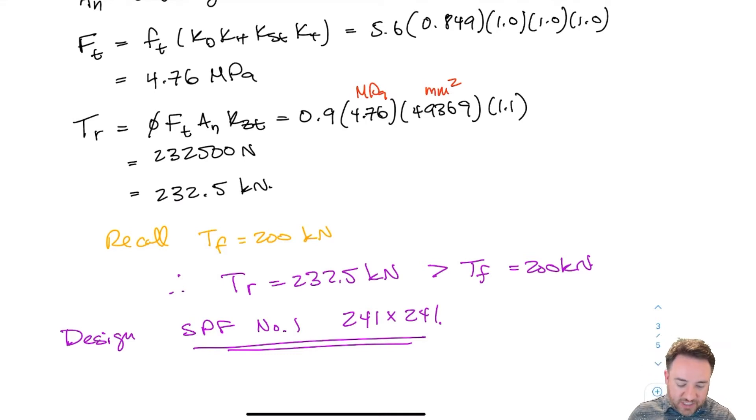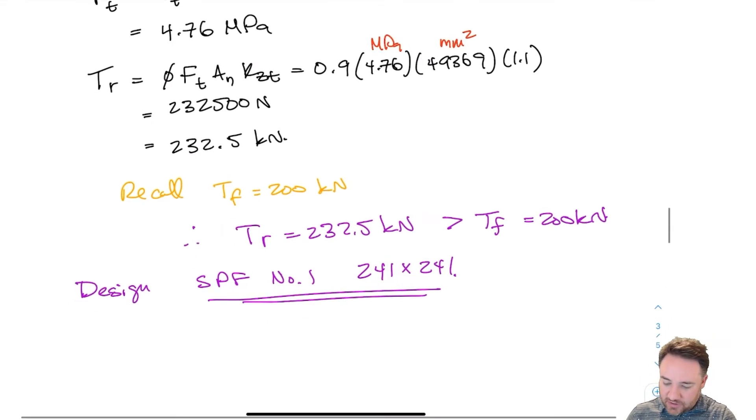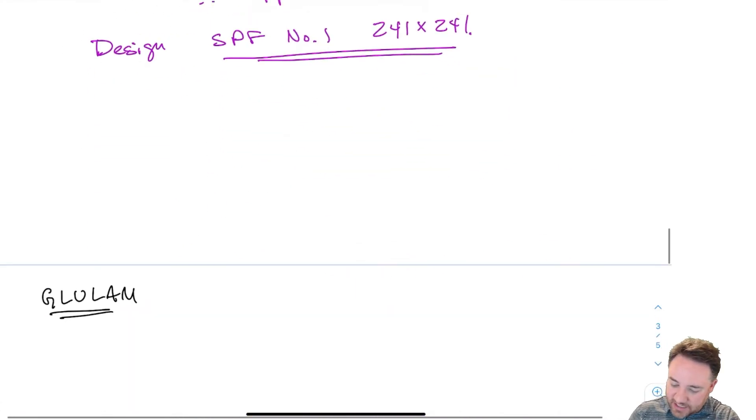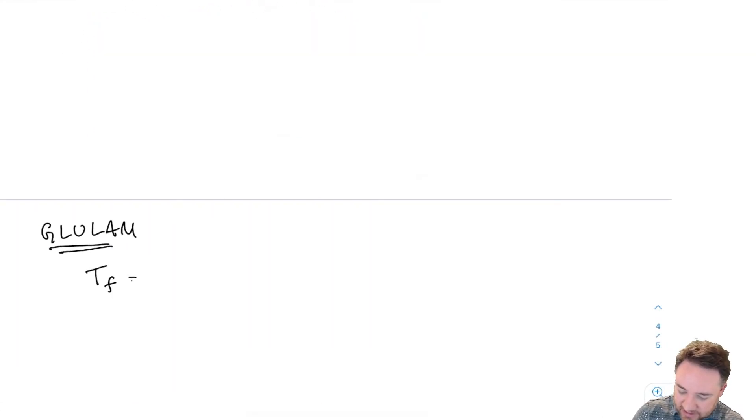Now we're going to repeat the same process for glulam, and we're going to recall again the TF is 200 kilonewtons and that is coupled with a KD of 0.849. Whenever I have a TF, it's not defined on its own. That TF is associated with a certain KD. In this case the TF was from a load combination that included dead plus live only. For that one, since dead was greater than live, we used the interpolation equation to get KD, and that ended up with 0.849.